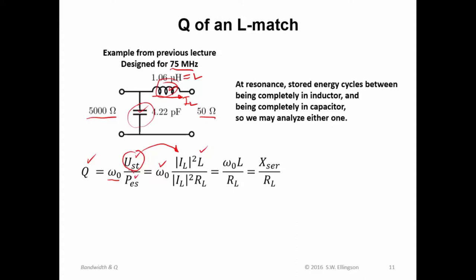Also, we know that the power that escapes must be given by I sub L magnitude squared times R sub L, where this is R sub L. This current I sub L is flowing through that load resistance, R sub L. And dissipated power is equal to the magnitude of I sub L squared times R sub L.